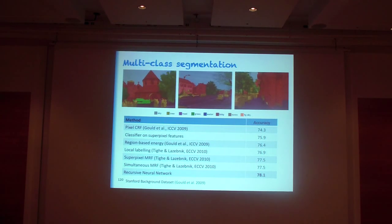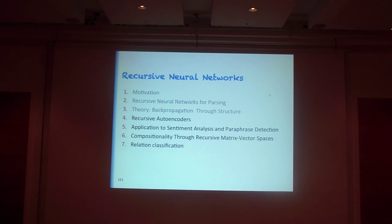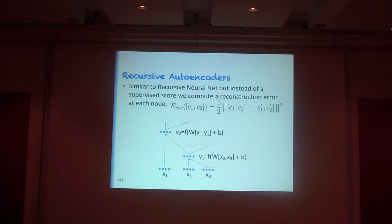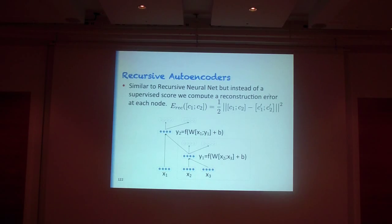It works better than a lot of other probabilistic models such as conditional random fields or Markov random fields. So that was all the theory we need for the parsing task. Now let's look at recursive autoencoders. Before, we needed the trees from the Wall Street Journal dataset to train the model.